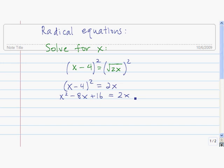Now we have a quadratic. We're going to get 0 on one side. We do that by subtracting 2x from both sides. We get x squared minus 10x plus 16 equals 0.